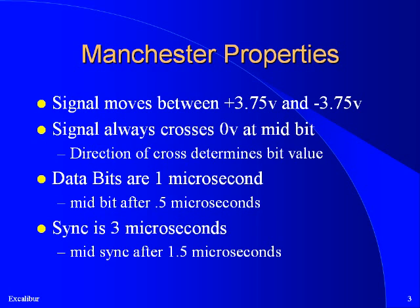Manchester encoding describes how the voltages flowing over the bus should be interpreted as ones and zeros by the devices connected to the bus. Each word begins with a sync signal, which looks different than a regular data bit. Devices use the sync to identify the beginning of a word. The signal moves up and down between plus 3.75 volts and minus 3.75 volts. In the middle of each sync or bit, the voltage moves from one extreme to the other, and the direction of this move determines the bit value. The voltage may also change values between bits, particularly if two bits of the same value are transmitted one after the other.